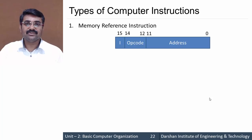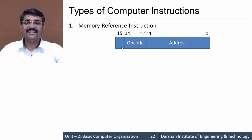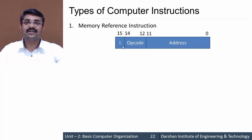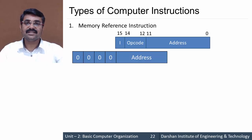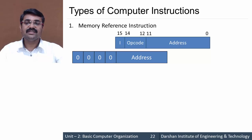The format of a memory reference instruction is divided into three parts: the first 12 bits specify the operand address, bits 12 to 14 (3 bits) specify the opcode, and the 15th bit specifies the addressing mode — whether the operand address is direct or indirect. The address of the memory operand is variable, but the opcode and addressing mode change across memory reference instructions.